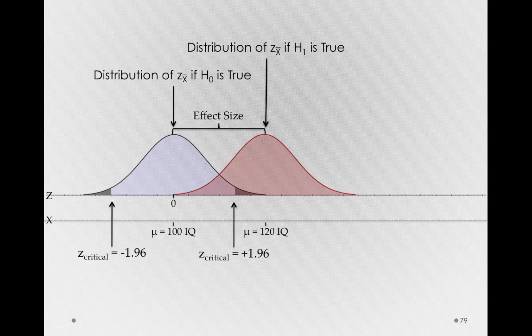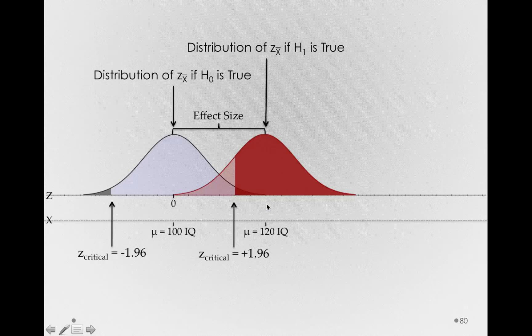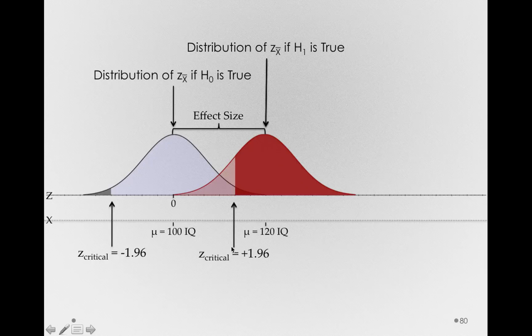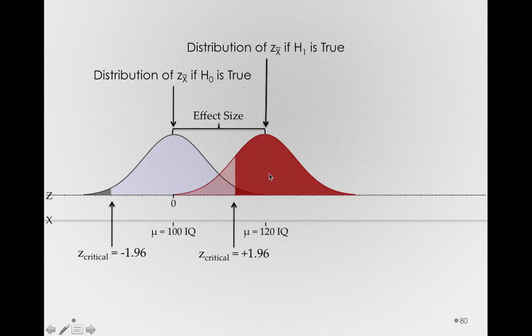let's consider the portion of the sampling distribution of z-sub-x-bar if H₁ is true. That is the sampling distribution under the alternative hypothesis. Let's consider the region that's more positive than that z-critical of positive 1.96. If you look at this region, that portion of this sampling distribution are all the samples that would allow us to reject the null.